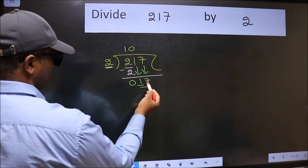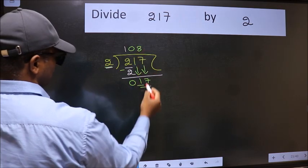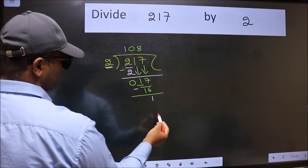Now 17. A number close to 17 in 2 table is 2 8s, 16. Now we should subtract. We get 1.